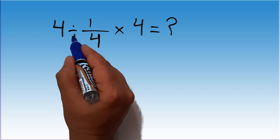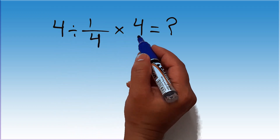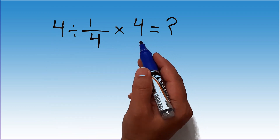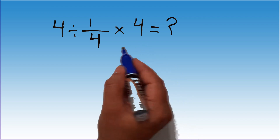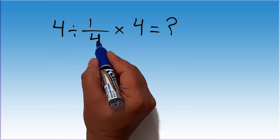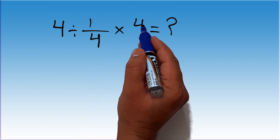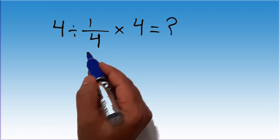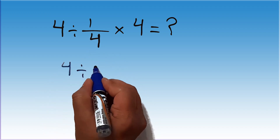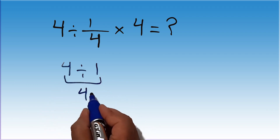4 divided by 1 over 4, then times 4. Our goal is to find the value of this expression. Here, we have 1 over 4 times 4. We can easily cancel this 4 and this 4, so 4 divided by just 1, which is equal to 4. This answer is not correct.